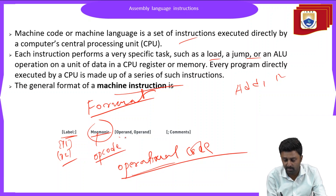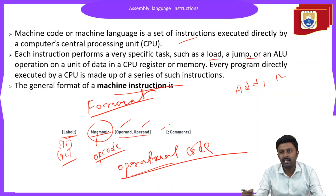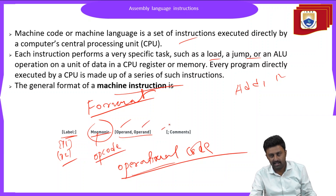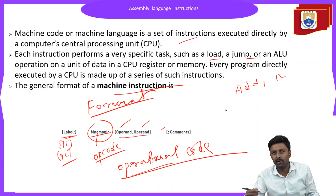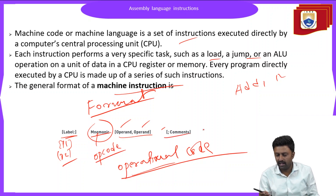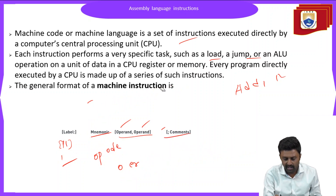The next part will be the operands. The operands may be one, two, or three, depending on the instruction. At the end, we can also mention comments. This is the general form of any instruction in assembly language, consisting of the label, mnemonic (opcode), operands, and optional comments.